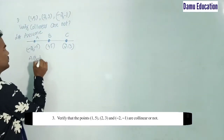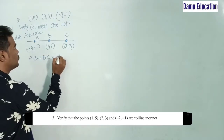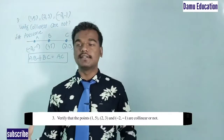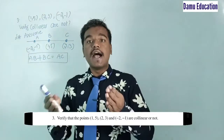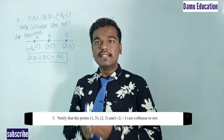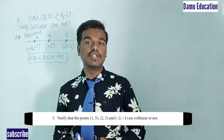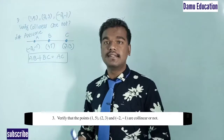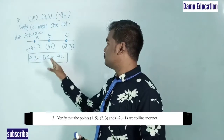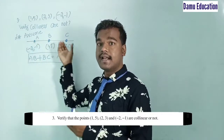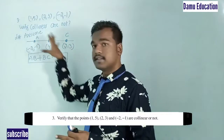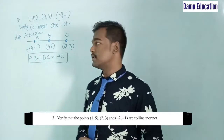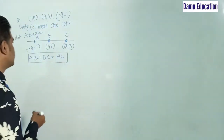The condition for collinearity is: AB + BC = AC. That means if the sum of the distance between A and B and the distance between B and C equals the distance between A and C, then A, B, and C are collinear points.